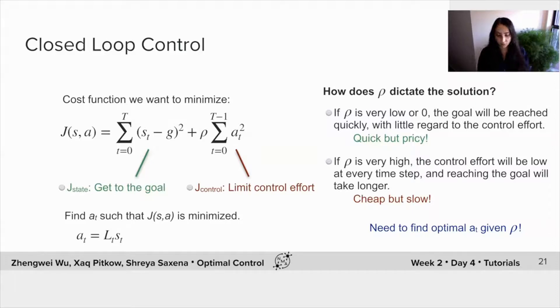On the other hand, if rho is very high, the control effort will be low at every time step. But reaching the goal may just take much longer. So this is a cheap way of getting there, but maybe much slower. So our task becomes to find an optimal a(t) or optimal control gain, given a rho.